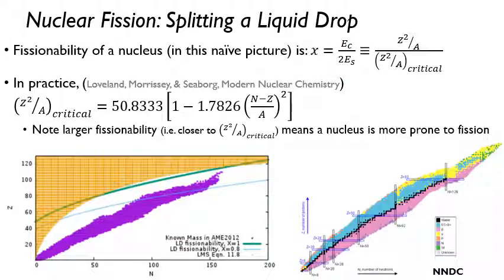So let's see how that compares to reality here. So we have the nuclear chart in both bottom parts of the slide here. So proton number increases in the vertical direction, neutron number in the horizontal. The purple shapes on the left-hand side, these are just all the nuclei with known mass as of 2012.